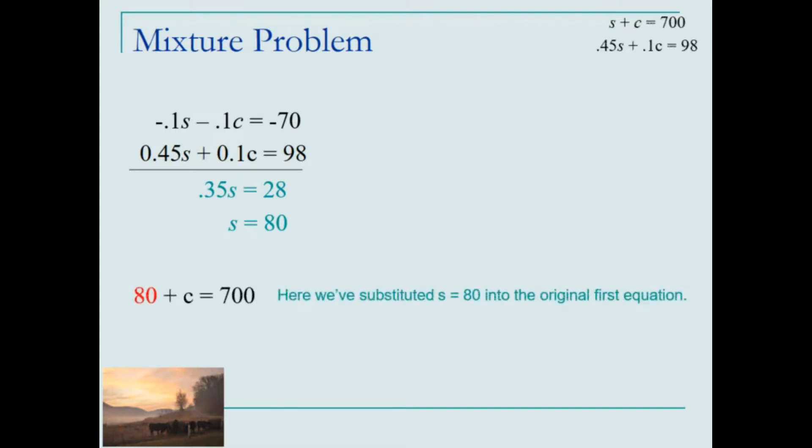We'll then use s equal 80 and substitute that value into one of the two equations. Here we've substituted it into the first equation so that in place of s, we have 80. We now can solve for c by subtracting 80 from each side and find a value of 620 for c.